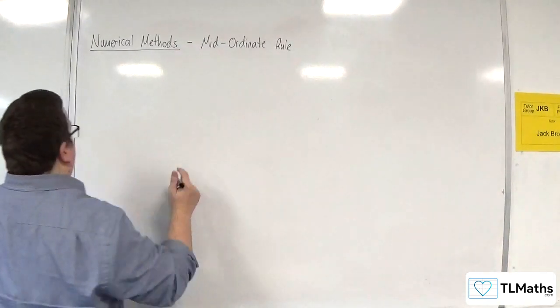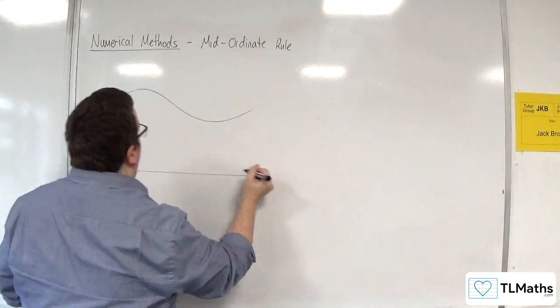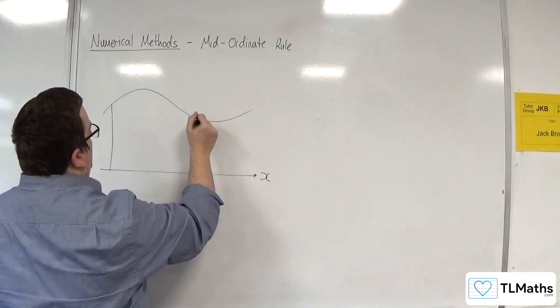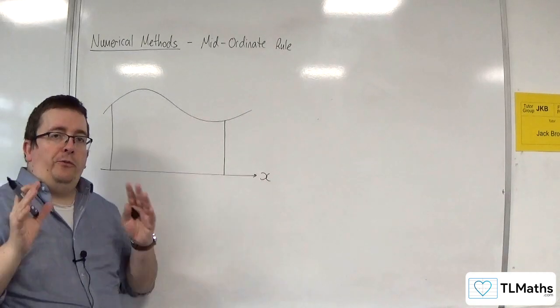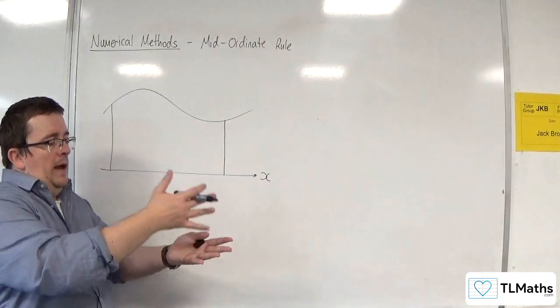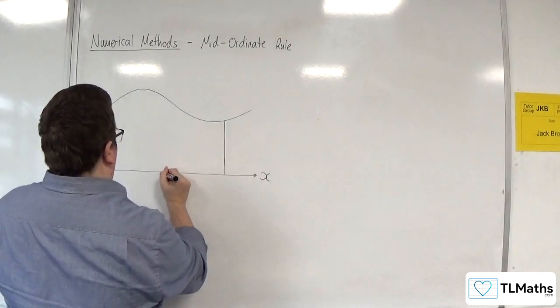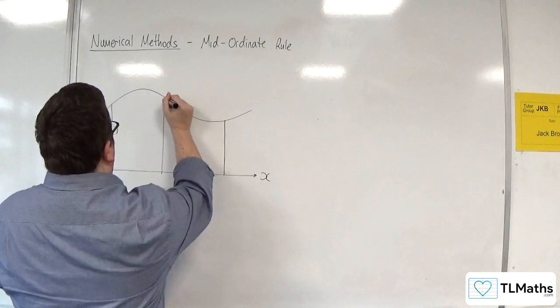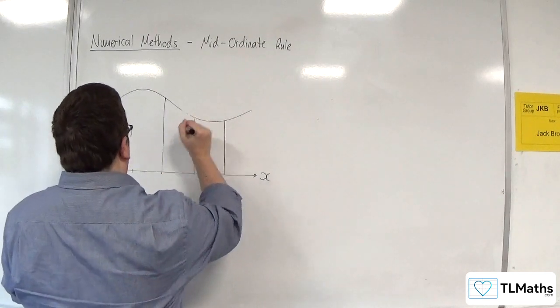If this is your curve and here's your x-axis, and you want to work out the area between that point and that point, then I'm going to split it up into equal parts. One there, and now one there, going up to the curve.